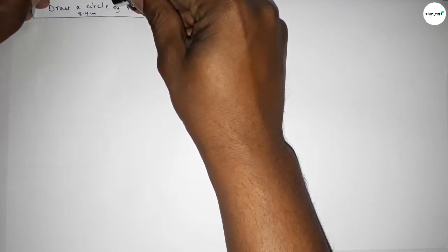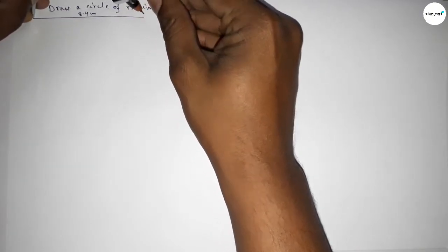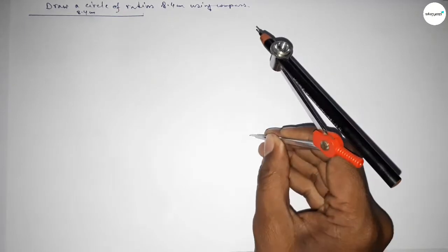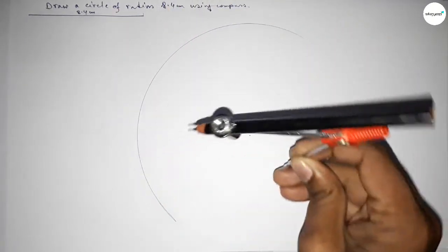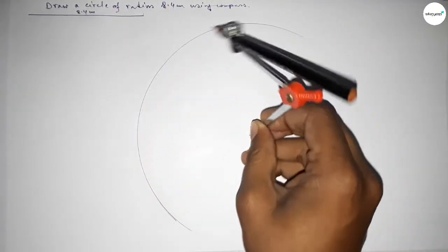Setting the compass this way, and now putting the compass on the point here. Next, drawing an arc like this.